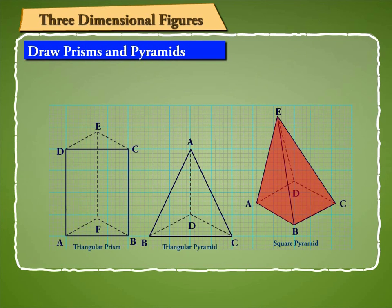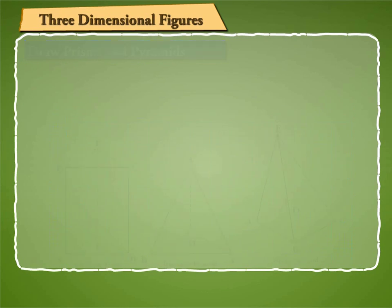Number of visible and hidden faces depends on the angle from which you see the figure. The number of faces, edges and vertices of prisms and pyramids are connected by the formula.